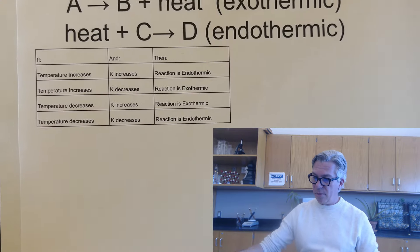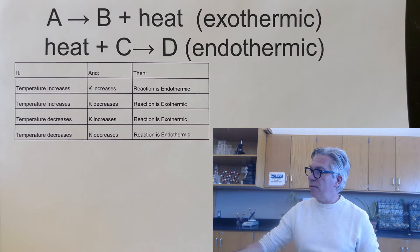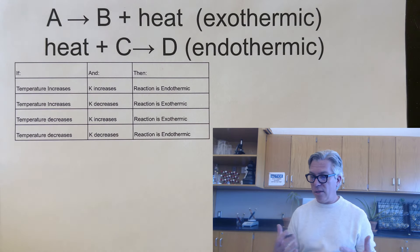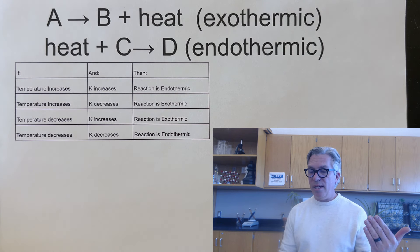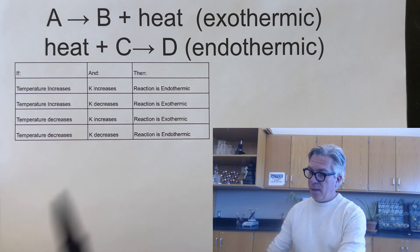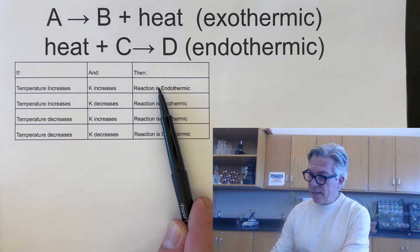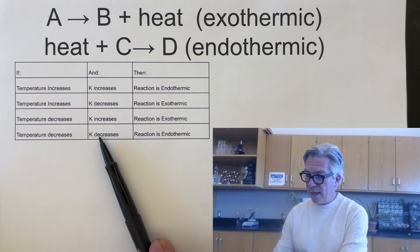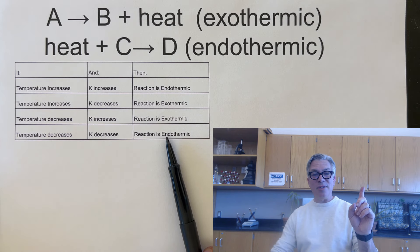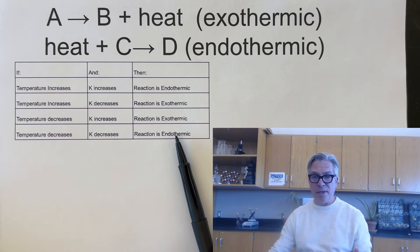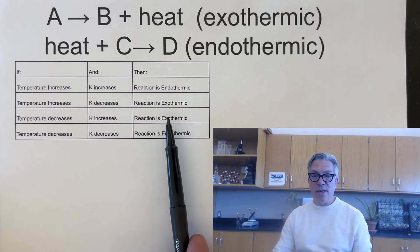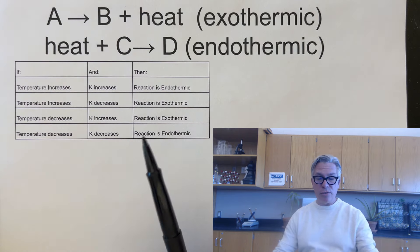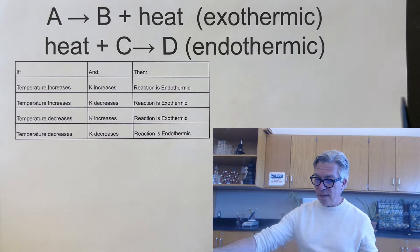This can be summarized in a useful table: if temperature increases and K increases, the reaction is endothermic; if temperature decreases and K decreases, also endothermic — when T and K go in the same direction, the reaction is endothermic. If temperature and K go in opposite directions (T increases, K decreases, or T decreases, K increases), the reaction is exothermic. Pause the video and get that down if it's helpful.